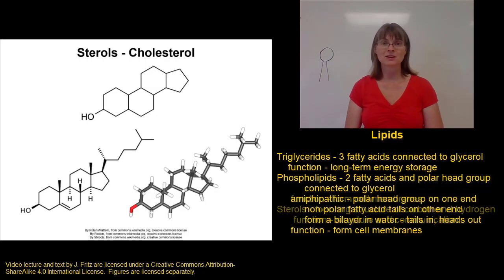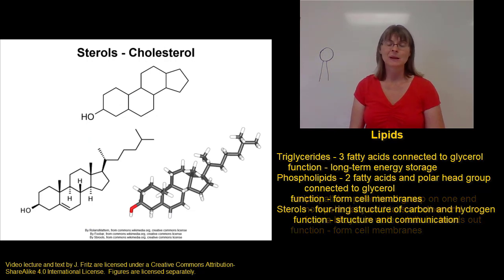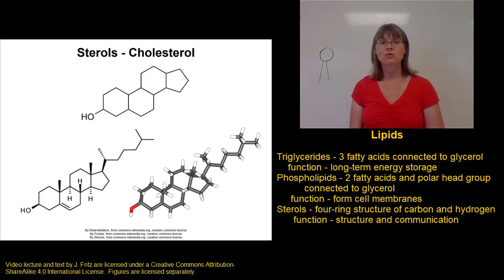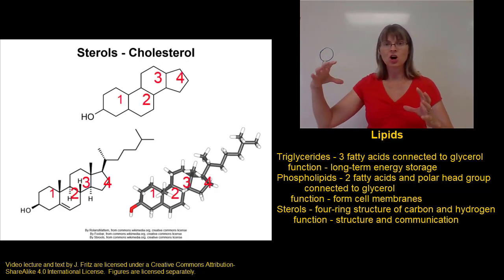The last type of lipids I want to talk about are the sterols. Sterols are important for structure, we're going to see some of them in cell membranes, and also for communication, because many hormones are sterols. As far as the structure of a sterol goes, you can recognize a sterol by its structure of four connected rings of carbon and hydrogen. We have four rings of carbon that are all smooshed together, and that gives us our sterol structure.